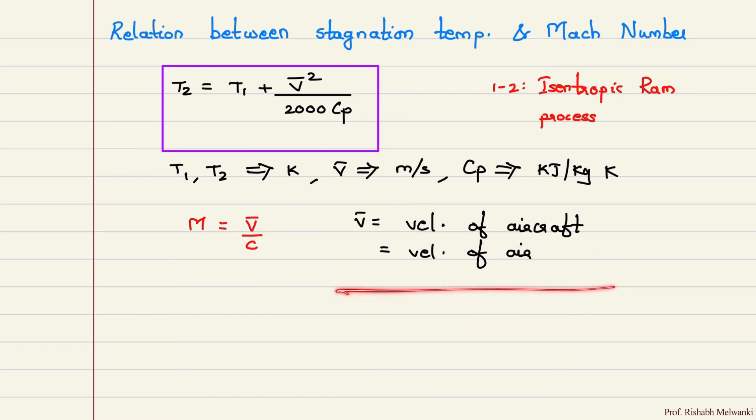If you are looking at the wind tunnel, aircraft is stationary and wind flows over the aircraft. So in that case we will consider velocity of air. So it depends. V bar is velocity of aircraft or velocity of air, whereas C is sonic velocity or acoustic velocity.